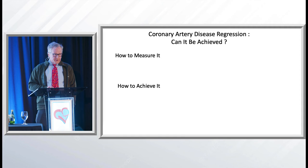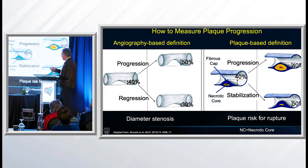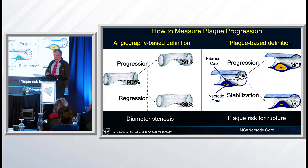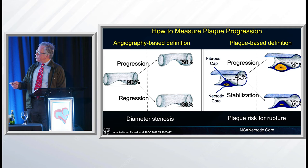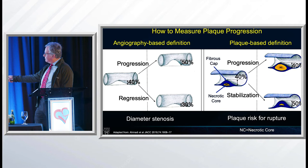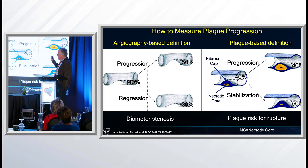Coronary artery disease regression — how do you measure it, how do you achieve it? If you look at the angiography-based definition: a 40% lesion progresses if it goes to 50%, and regresses if it goes to 30%. But with a plaque-based definition, you can see that the necrotic core can get worse even while the lumen looks similar, while stabilization means the plaque cap gets thicker. The plaque-based definition on the right is a much more accurate way to measure plaque than the luminal approach.